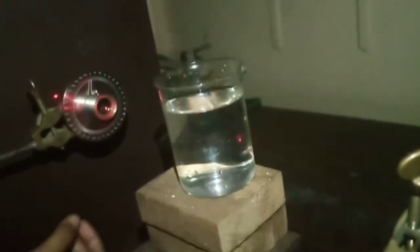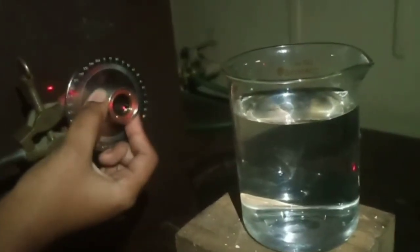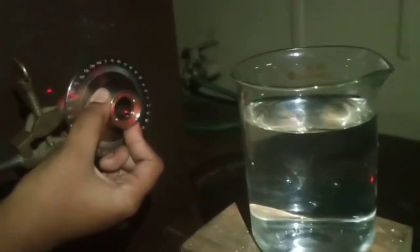Initially, we keep the beaker in between the two parallel placed polarizers. When there is no glucose powder added to the water, we find the point of complete darkness. This will be our reference point from where we measure change in the angle of rotation when the concentration of the solution changes.